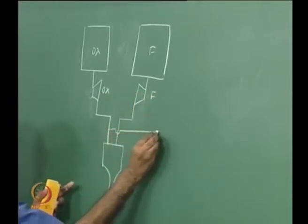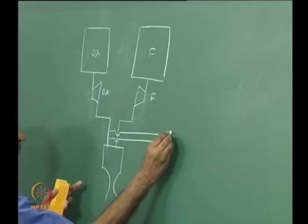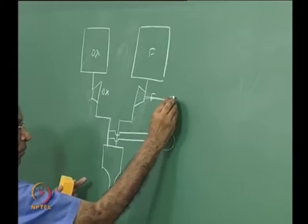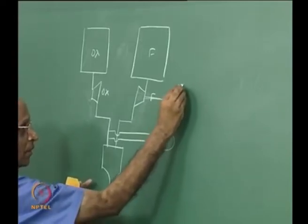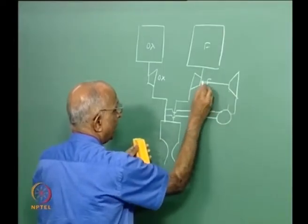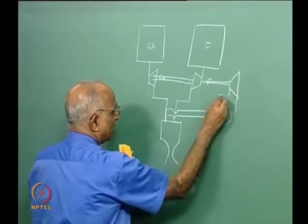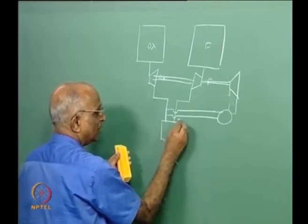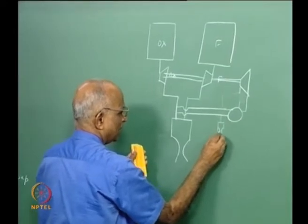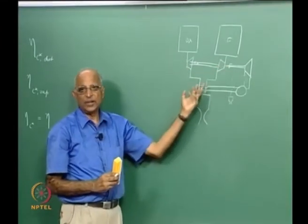We bleed some oxidizer and fuel, burn it in a gas generator, and drive the two pumps via a turbine. The gases expand in the turbine, reducing pressure and generating power. When the exhaust gases are put back into the chamber, it is called staged combustion; when they go out through an auxiliary nozzle, it is a gas generator cycle. So we should spend some time on these pumps and turbines.